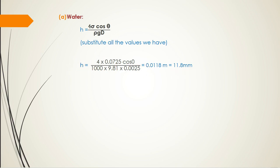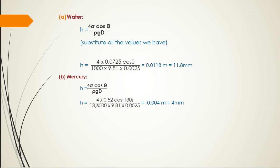For mercury: using the same formula h = 4σ cosθ / (ρgd), substitute: sigma = 0.52, theta = 130°, rho = 13,600 kg/m³, g = 9.81 m/s², d = 0.0025 m. The result is h = −0.004 m or −4 mm. The negative value confirms capillary depression for mercury.